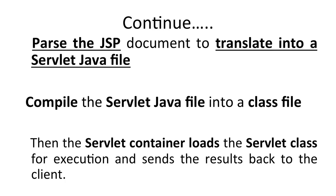The JSP program is converted into a .java file, which is then compiled into a .class file, and finally into the servlet. Whatever benefits servlets provide are equally available in JSP. The JSP document is parsed and translated into a servlet Java file, compiled into a class file, and the servlet container loads the servlet class for execution, sending the result back to the client.